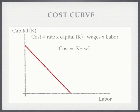The actual formula becomes cost equals R times K plus W times L. When I solve for K, or capital, the slope of the line is wages divided by the rate of capital.